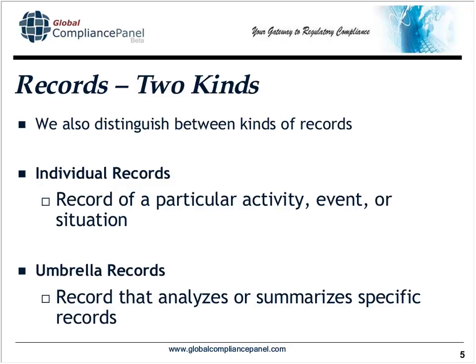We're going to look at two kinds of records. Individual records are created when you perform a particular activity — an event or situation causes you to create a standalone record. But sometimes we also have to analyze and summarize specific records. Data analysis in ISO 13485 and FDA regulation 820.100(a)(1) requires us to analyze data. That data analysis is going to create what I'll call an umbrella record — a record that covers multiple individual records and summarizes information from those records.